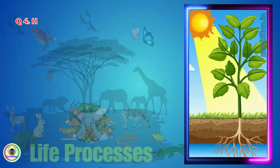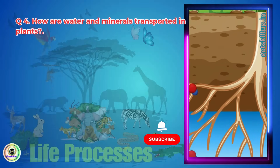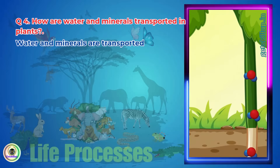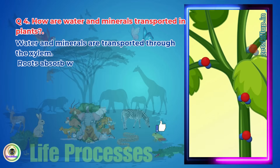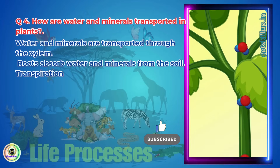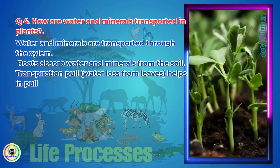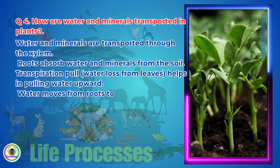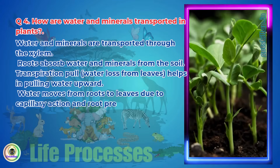Question 4. How are water and minerals transported in plants? Water and minerals are transported through the xylem. Roots absorb water and minerals from the soil. Transpiration pull — water loss from leaves — helps in pulling water upward. Water moves from roots to leaves due to capillary action and root pressure.